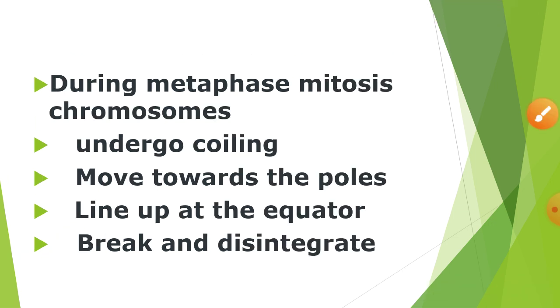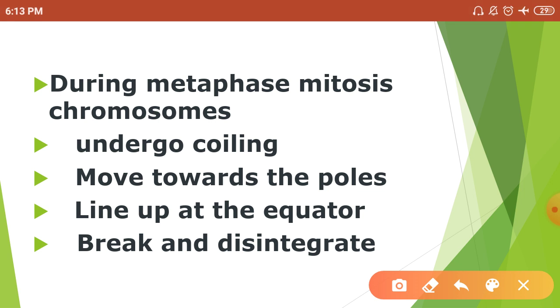During metaphase mitosis, chromosomes undergo coiling, move towards the poles, line up at the equator, or break and distinguish. During metaphase, they line up at the equator.